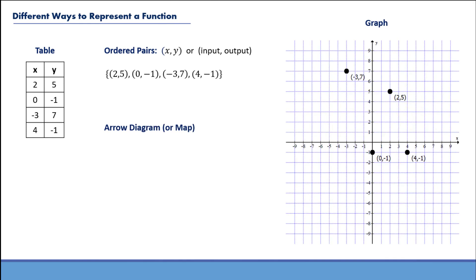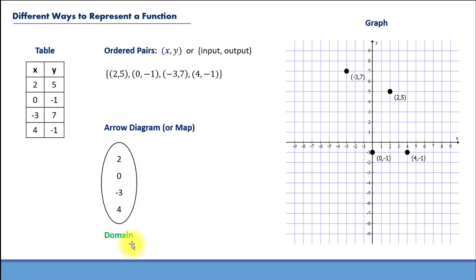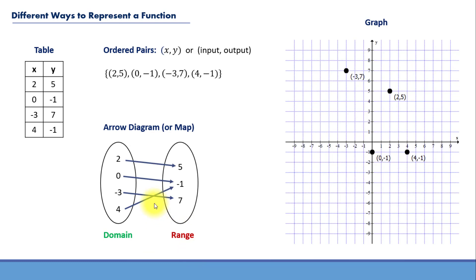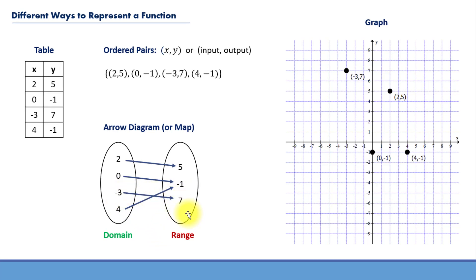Another way to visualize a function is to use what we call an arrow diagram or map. An arrow diagram lists all possible inputs — remember, they're called the domain of the function — and all possible outputs, in other words, the range of a function. Then we use arrows to show the relations. For example, here we can see that input negative 3 has the corresponding output 7, or we can say negative 3 maps to 7.